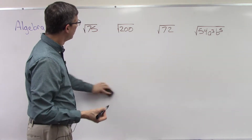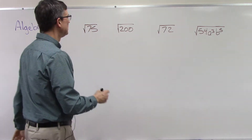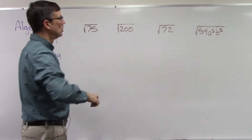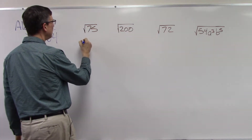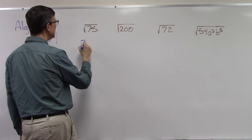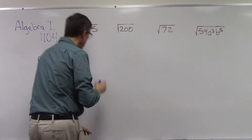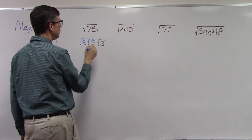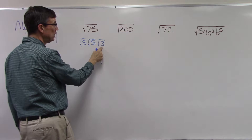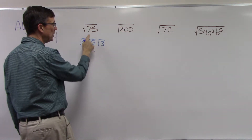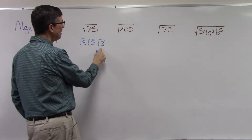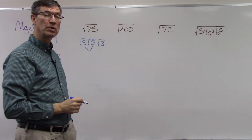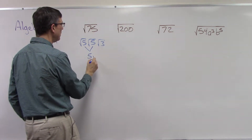Let me follow that method to solve these problems. Square root of 75: 75 is 25 times 3, which is square root of 5 times square root of 5 times square root of 3. You can think of it as 25 times 3 is 75. Now notice these two are the same — square root of 5 and square root of 5 — so the 5 pops out and you get 5 square root of 3.